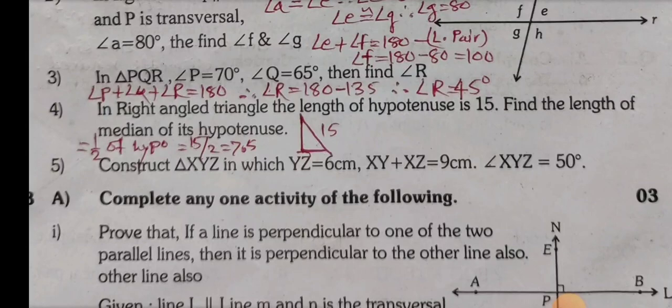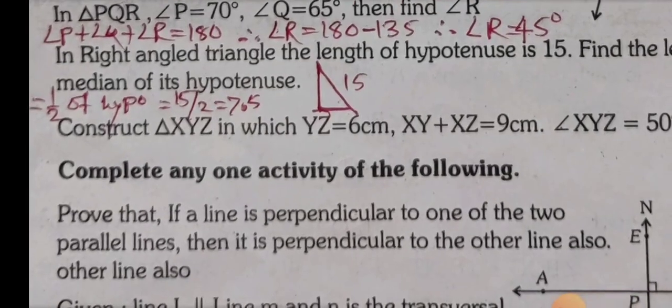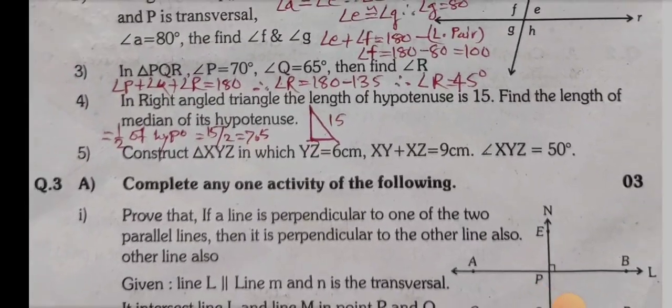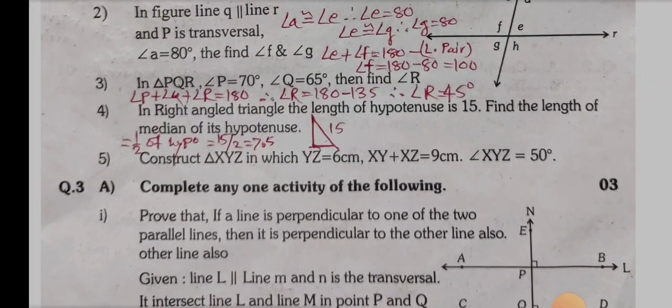Sub-question 4: In a right angle triangle, the length of the hypotenuse is 15. Find the length of the median to the hypotenuse. The length of the median equals half of the hypotenuse in a right angle triangle. Therefore median equals 7.5.